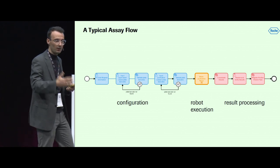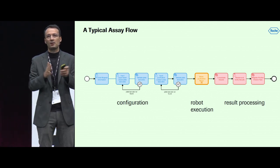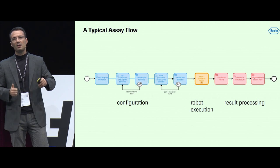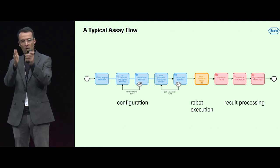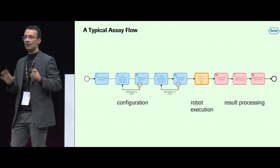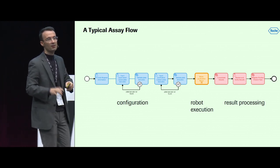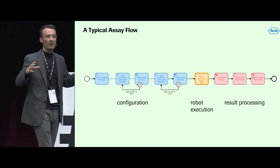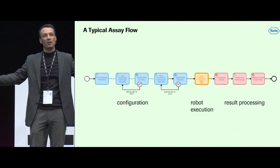We're getting very close to Camunda. If you look at one of those assays, you can actually model it as a BPM process. What you typically see is three phases: first, a configuration phase where the researcher enters parameters and validates inputs; then a middle phase where a robot does the execution; and lastly, collecting the results, processing them, and putting them into all the backend systems. This structure repeats itself in most assays, which leads to the idea: what if we describe all our assays as BPMN processes, chain them together, and depict our entire discovery process?